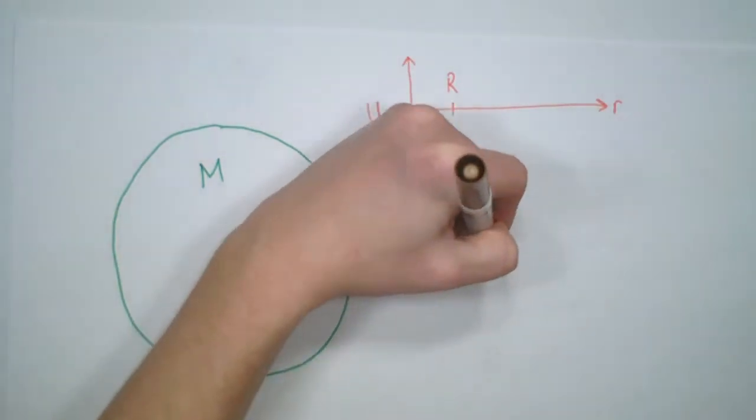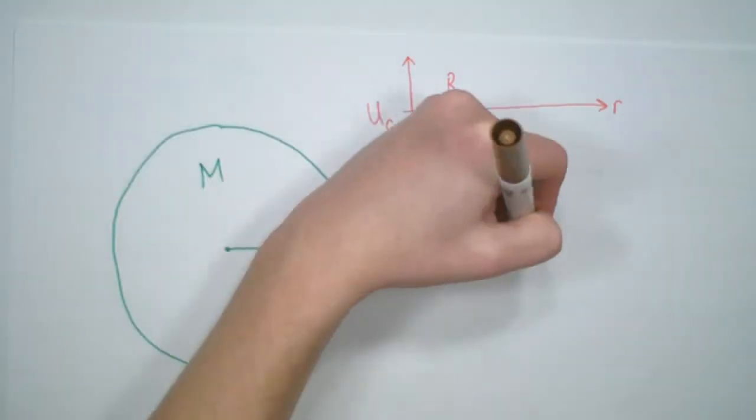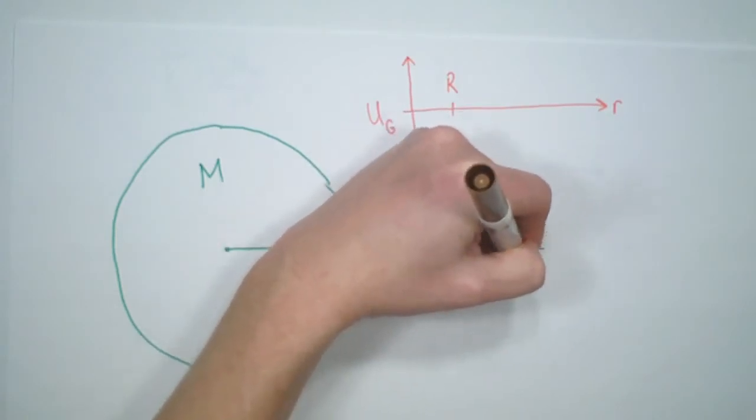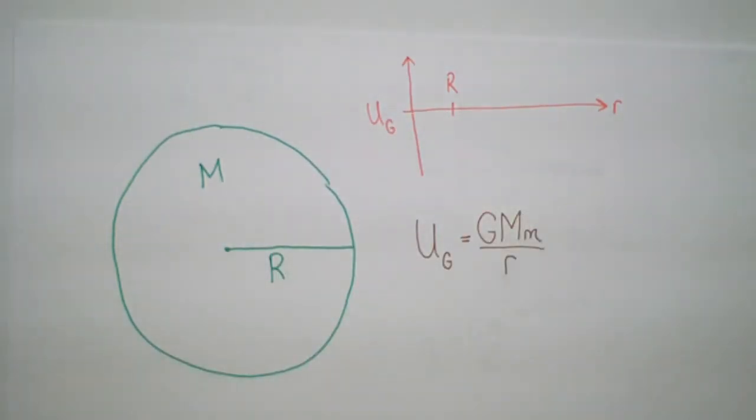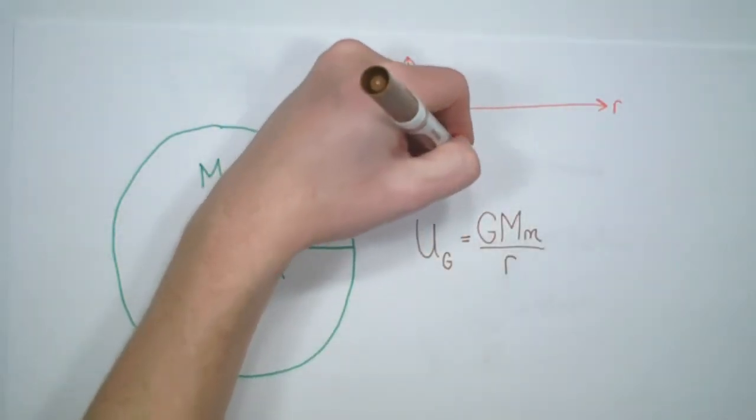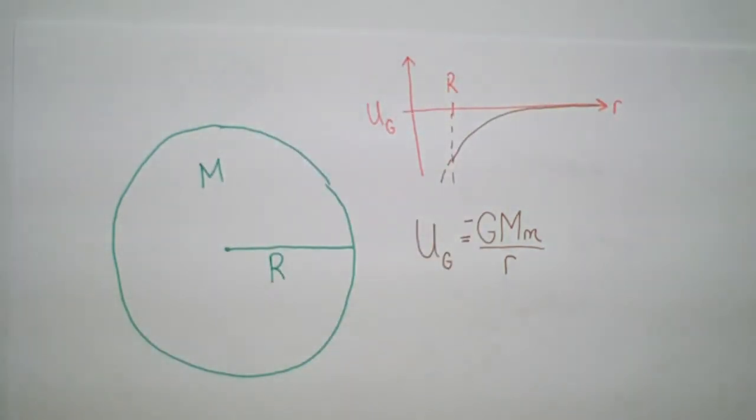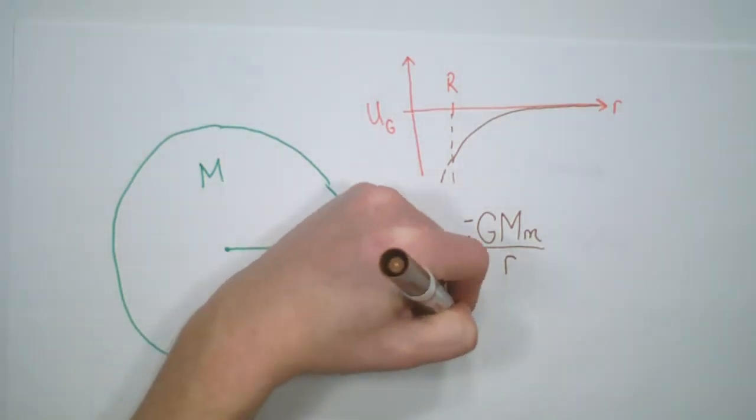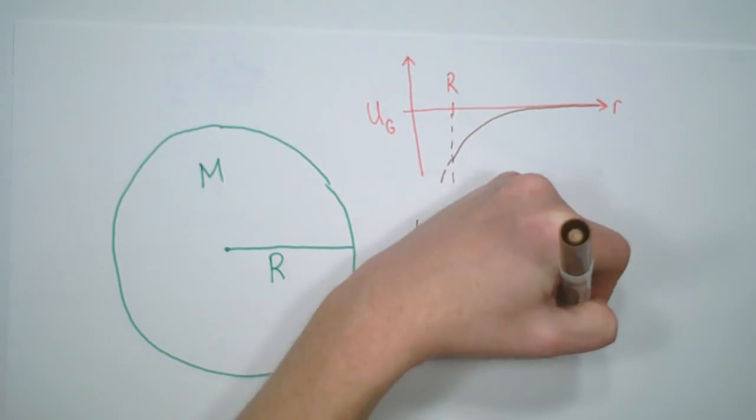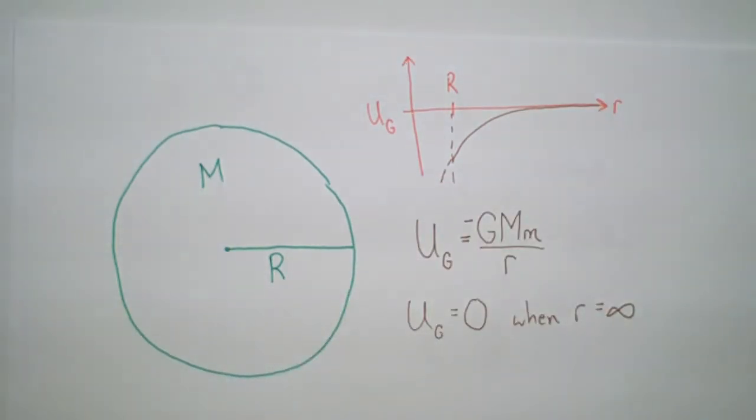So now we can look at what happens if we want to update this. And so what we're going to do is we're going to take mgh, but we're going to make some replacements. And so this gives us the gravitational potential energy is G mass of the planet mass of the object over r. And we give a negative sign because we're going to deal with potential energy wells. And so now we get that the potential energy is zero when r goes to infinity.